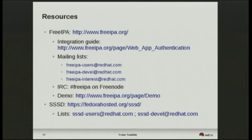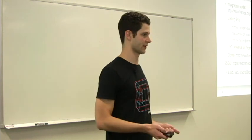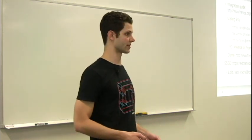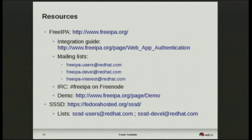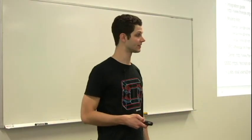Resources: the main website, an integration guide for Kerberising your web applications, and mailing lists — users and devel. For general questions use the users list; for development, patches, or enhancement requests use devel. There's also the low-traffic FreeIPA interest list which mainly has release announcements. FreeIPA on Freenode is the IRC channel. For SSSD there are SSSD-users and SSSD-devel mailing lists and an IRC channel.